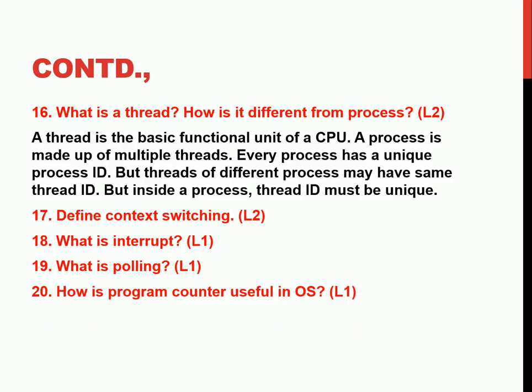How is the program counter useful in an operating system? The program counter holds the address of the next instruction to be executed. During context switching, when a higher-priority process comes in, I need to store where I was so I can come back later — I take the address and put it onto the program counter. Once the work at the destination is completed, that address is moved back from the stack to the program counter. From simple function calls to complex interrupt handling, the program counter is essential. It is a register — 16-bit, 32-bit, or more — depending on the processor architecture.